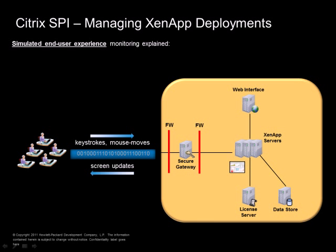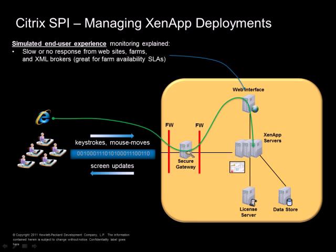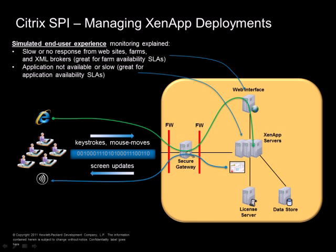For simulated or synthetic end user experience monitoring: during the web interface part of the session, Citrix Pi sits on the web interface and provides a probe that can detect slow or no response from websites, Xen App farms and Xen App XML brokers — great for measuring farm availability SLAs. During the application launch phase, Citrix Pi provides a probe to detect if an application is not available or slowly shows up, which is useful for application availability SLAs.